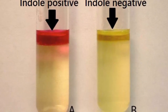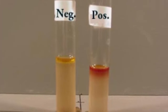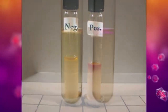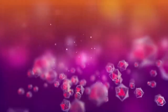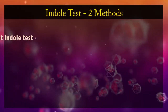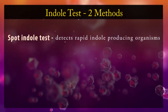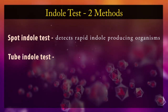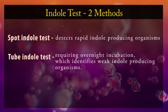The Indole Test determines the ability of organisms to produce indole from the degradation of the amino acid tryptophan. Two methods are described: a spot indole test, which detects rapid indole-producing organisms, and a conventional tube method requiring overnight incubation, which identifies weak indole-producing organisms.